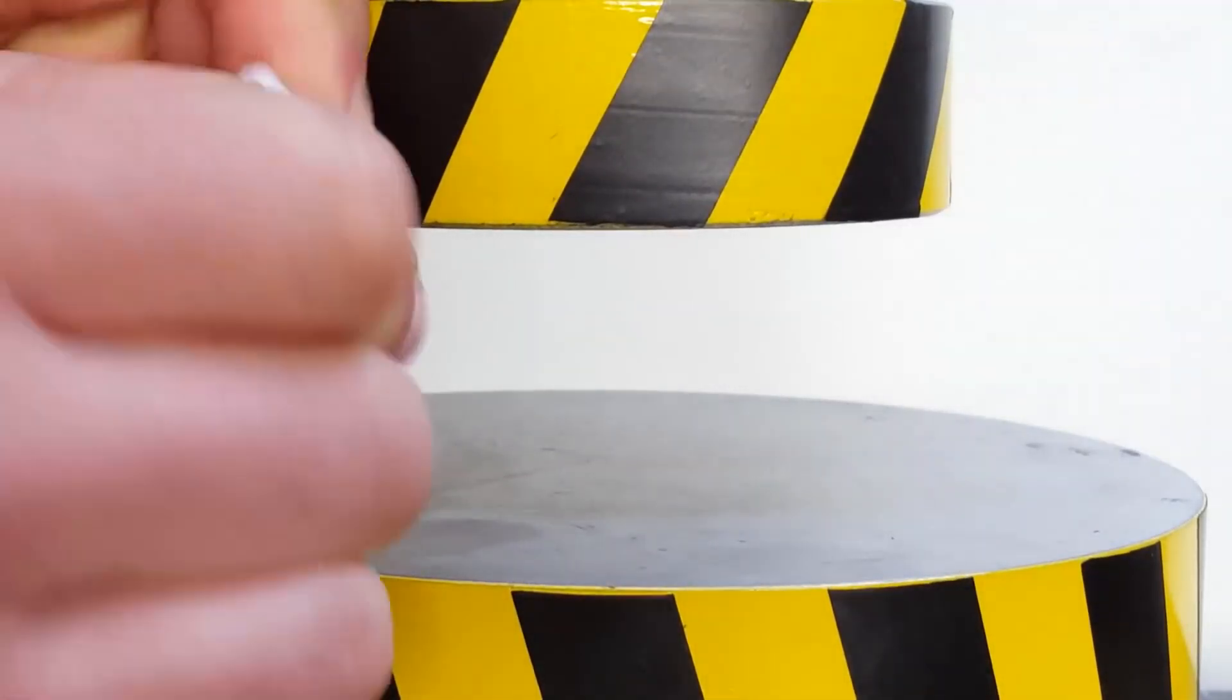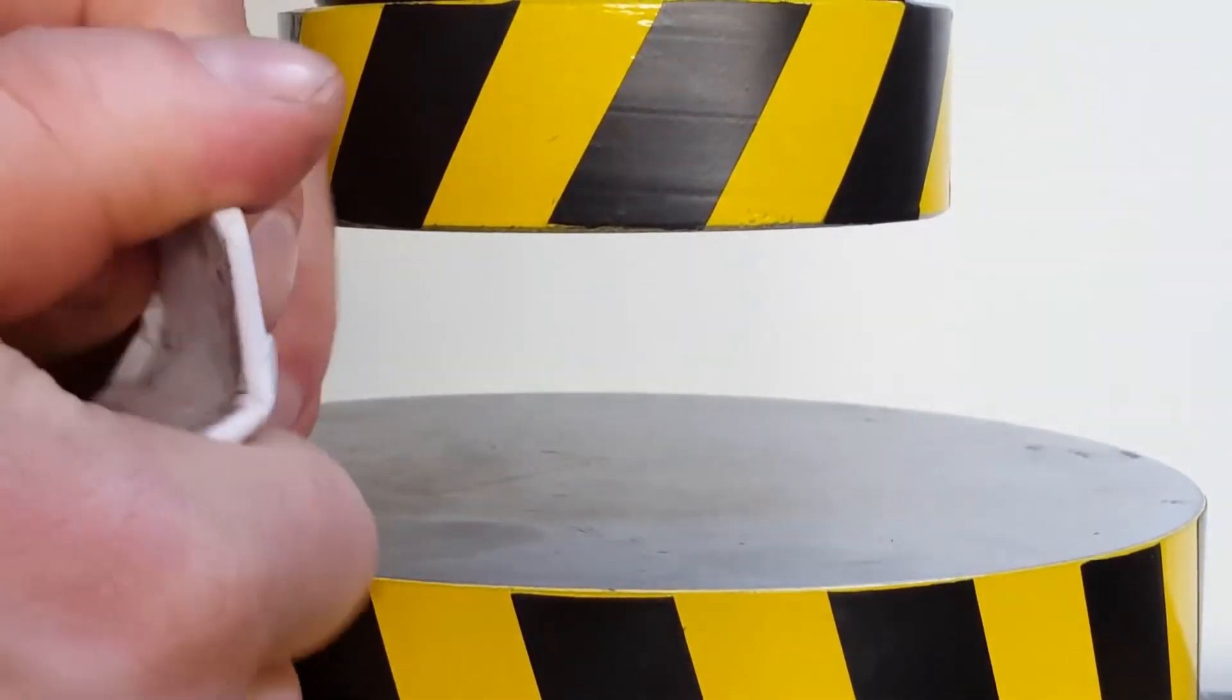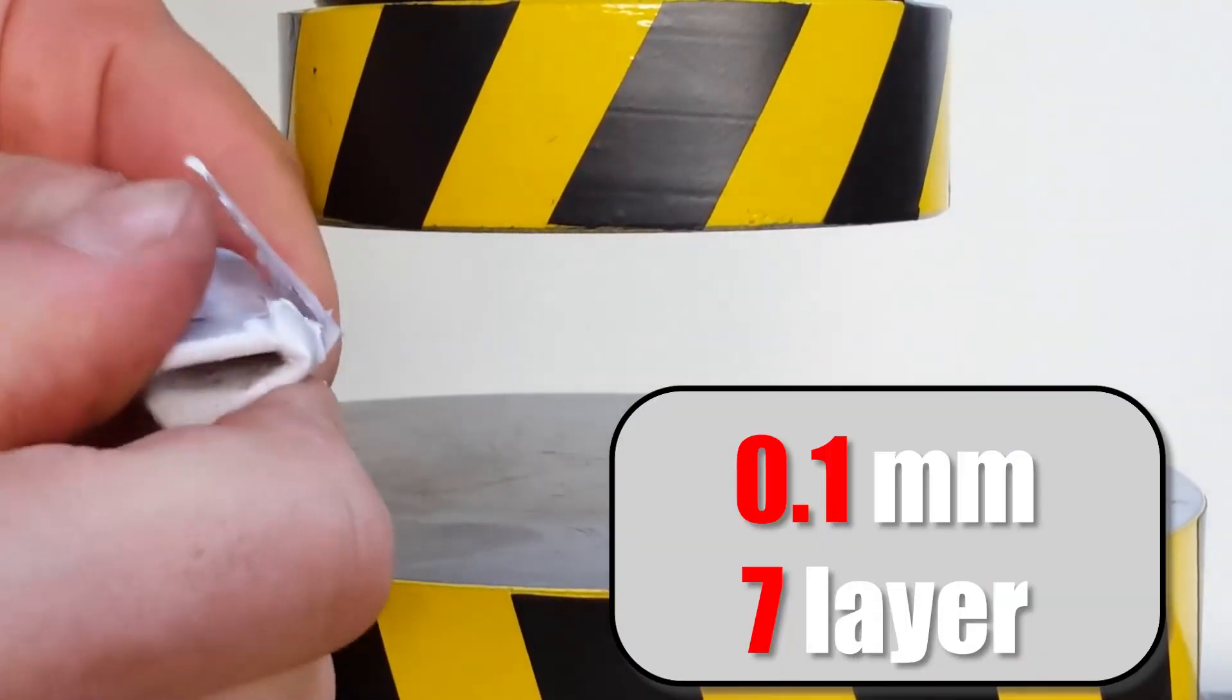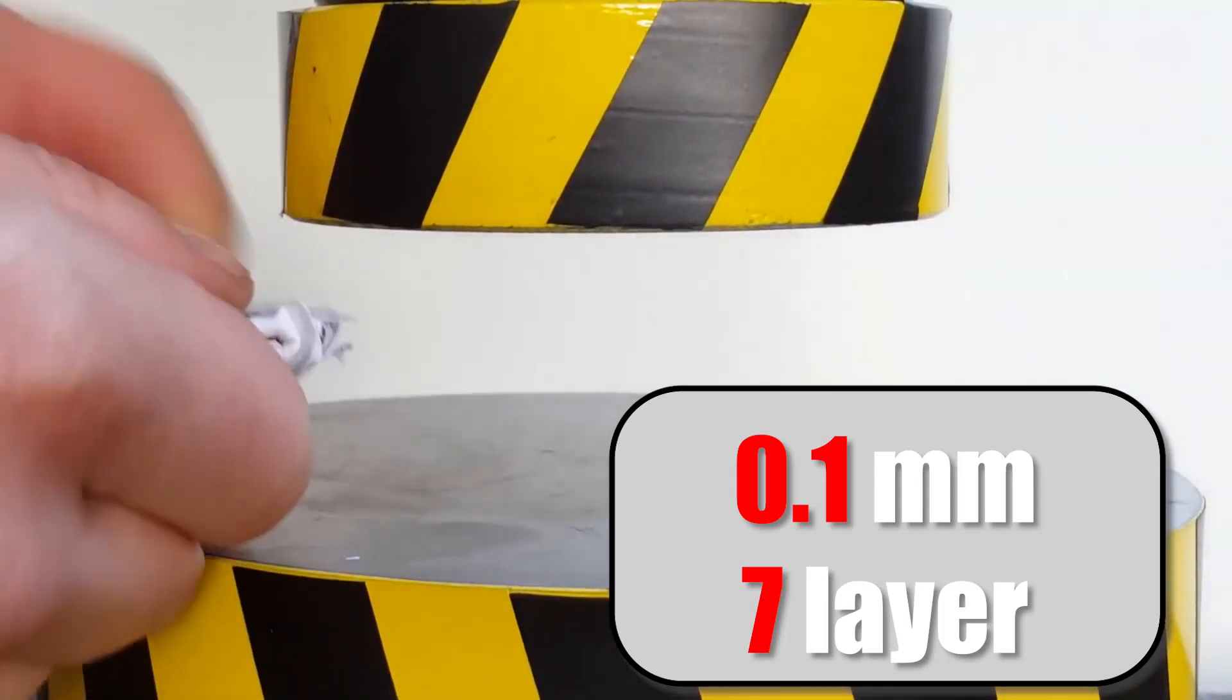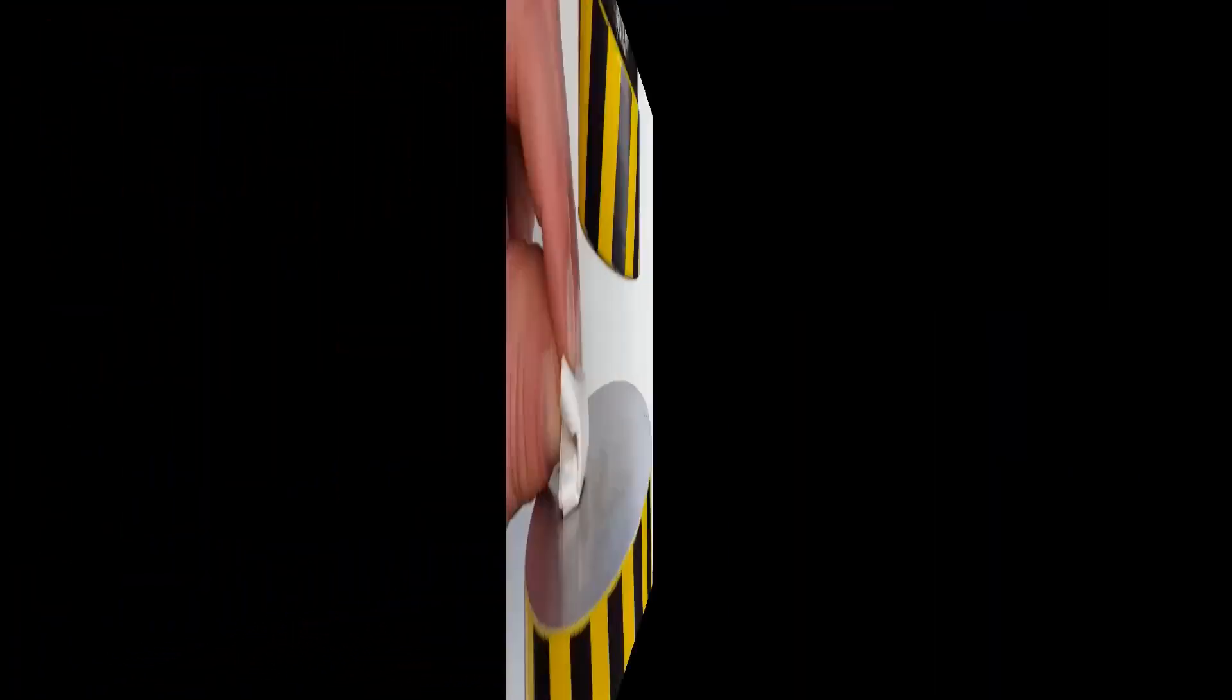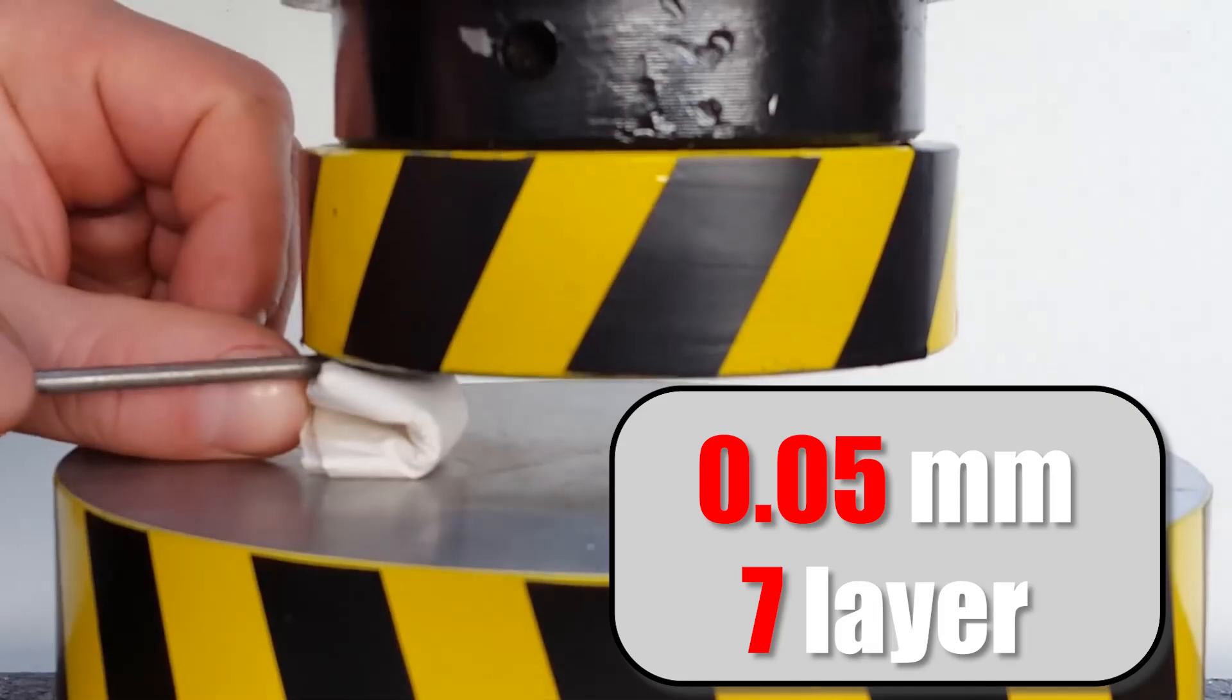We've already tried to fold an ordinary sheet of office paper. Even with the help of a 100-ton hydraulic press, it was only possible to fold it seven times. When trying the eighth folding, it has already started to break.